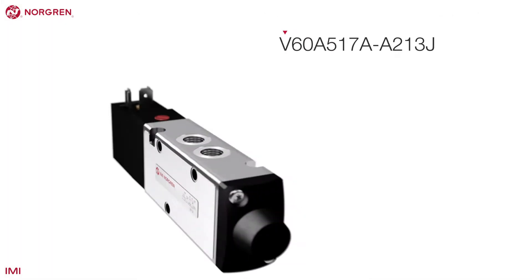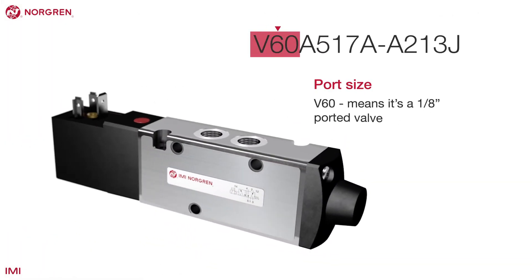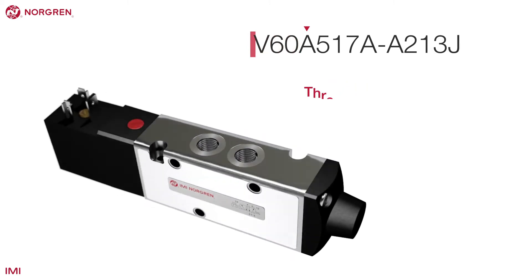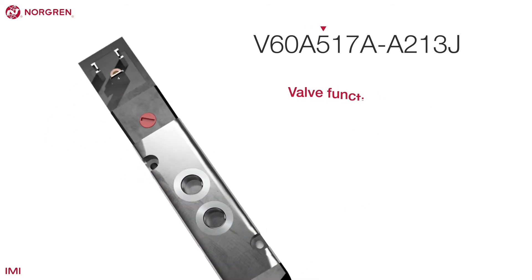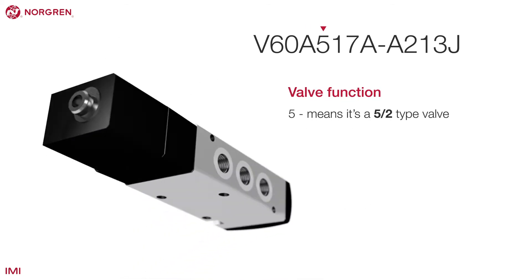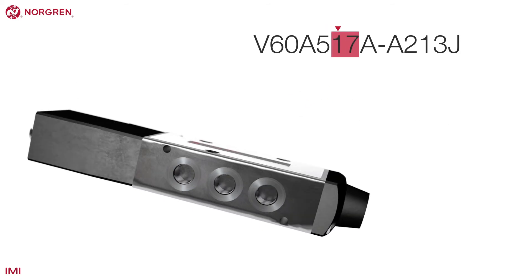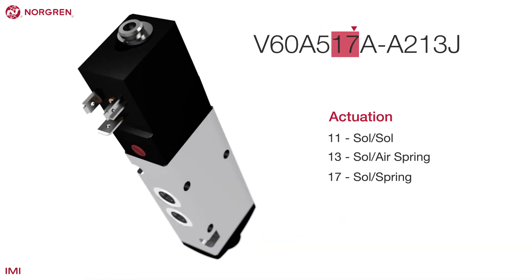Let's work through an example with a typical part number. Digits 1, 2 and 3 relate to the port size. Digit 4 gives us the thread type. Digit 5 is the valve operation. Digits 6 and 7 reveal this is an internally piloted solenoid spring.